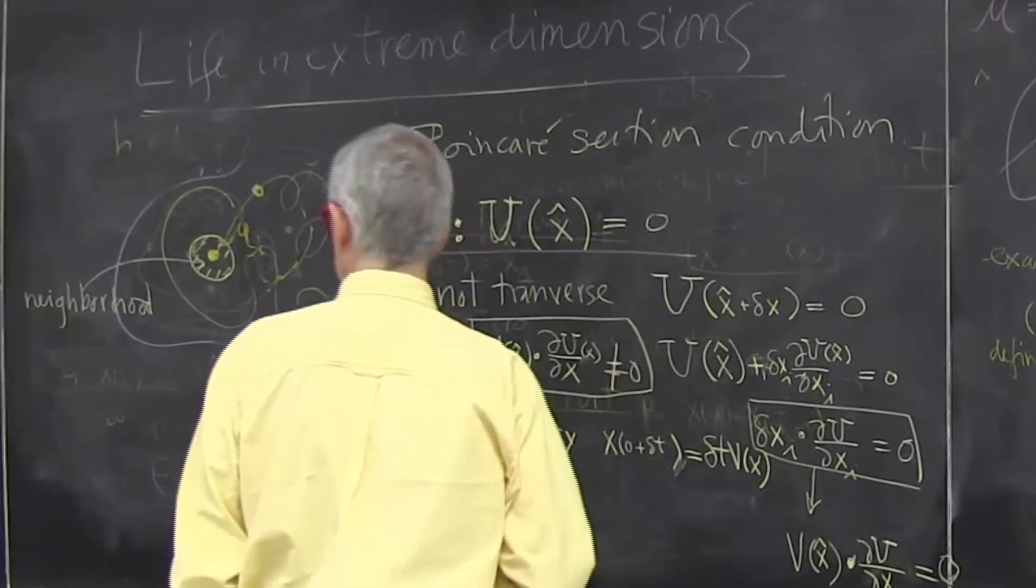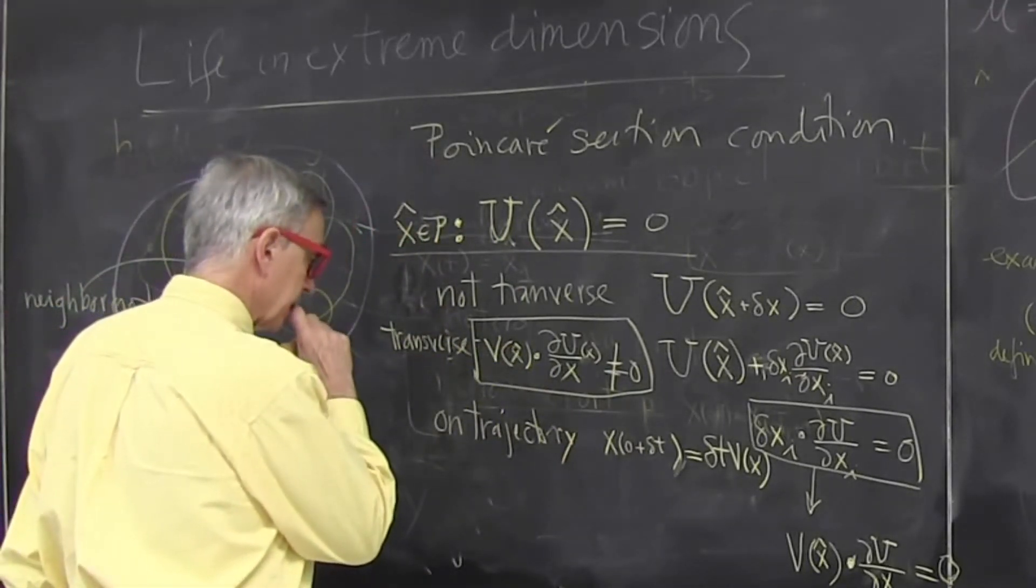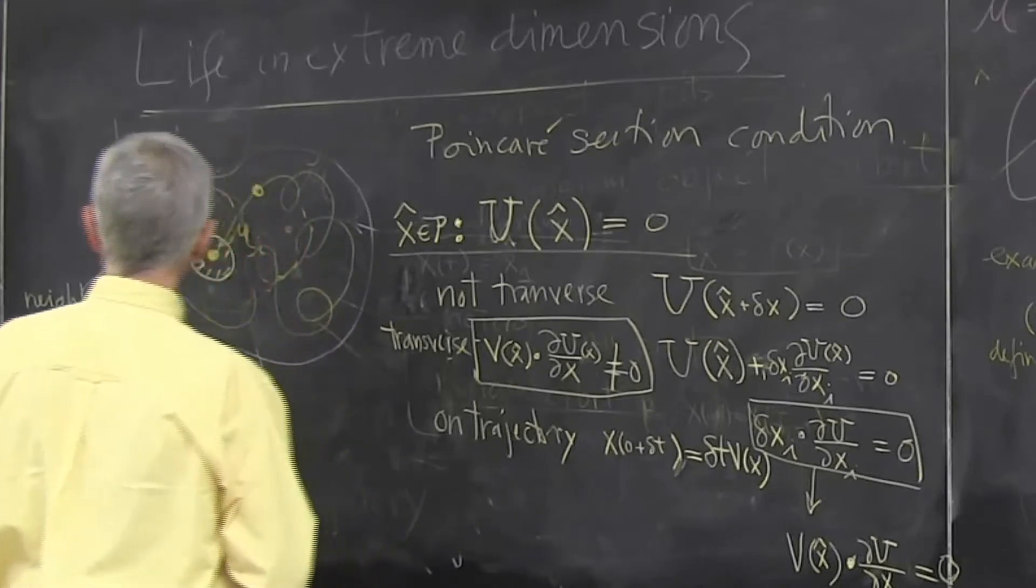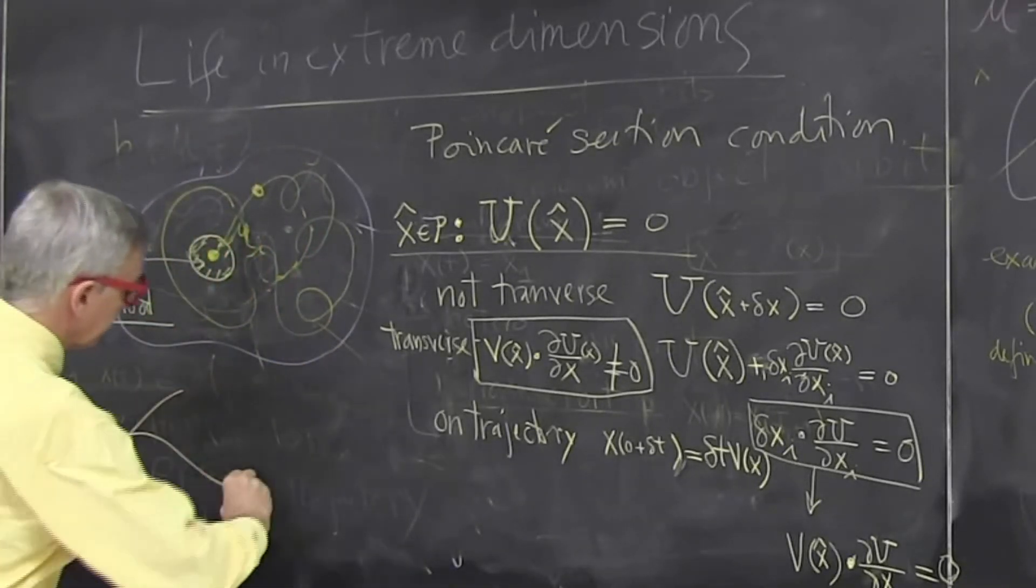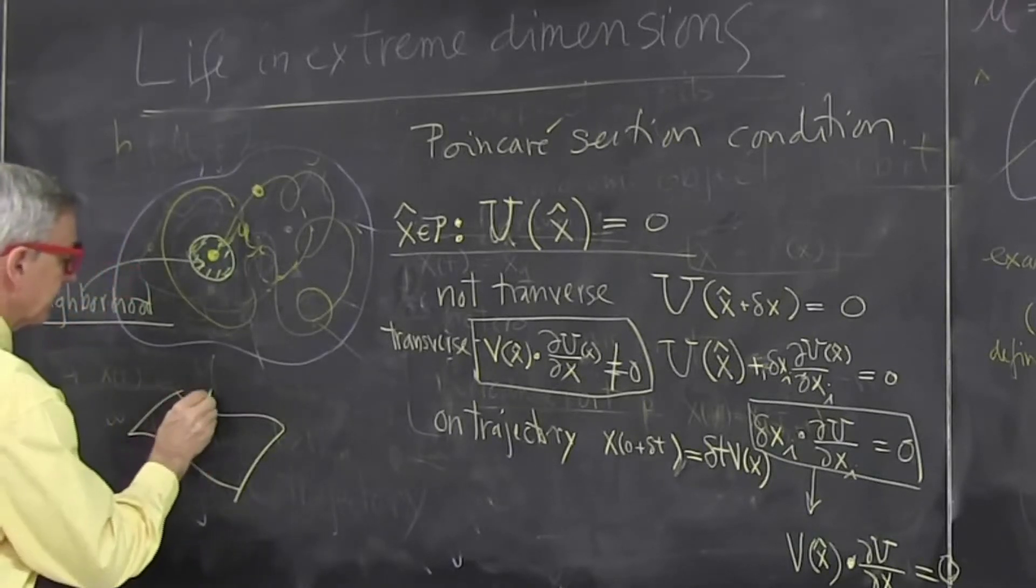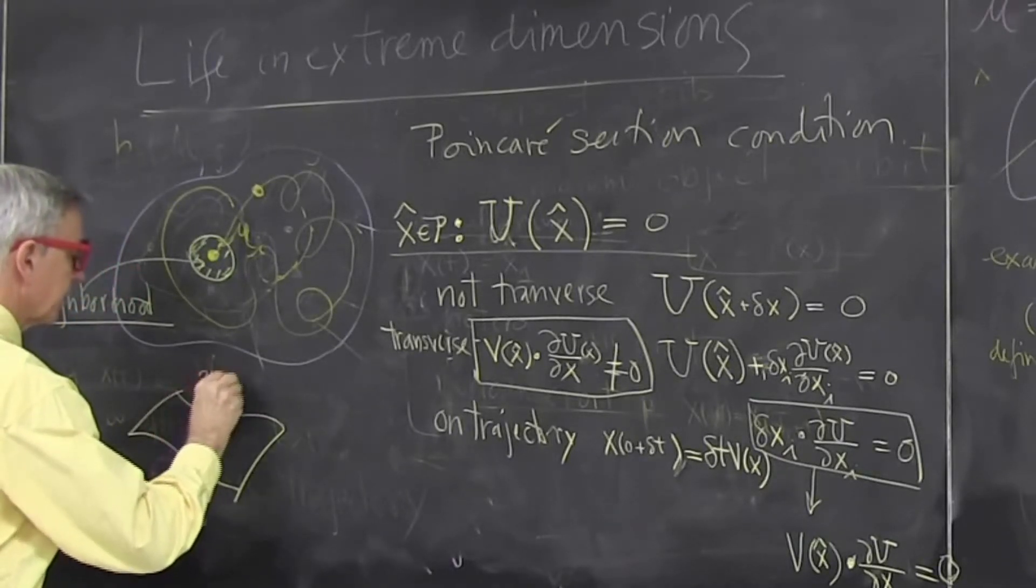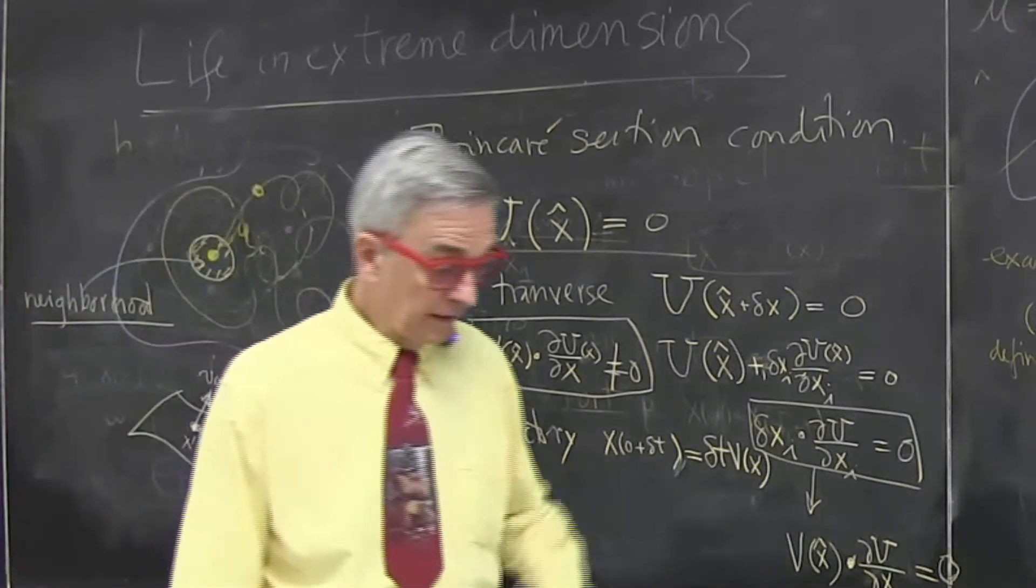At that point, I multiplied dotted with the gradient of my condition evaluated at that point. And that must not be 0. So that's one condition on the Poincaré section.